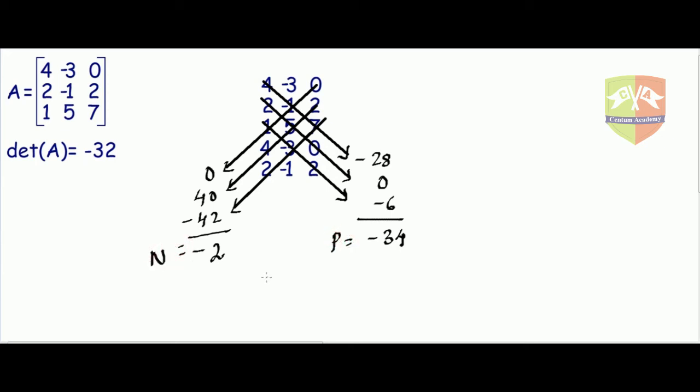So the value of the determinant of A will be nothing but P minus N, which is nothing but minus 34 minus of minus 2 which is minus 32.